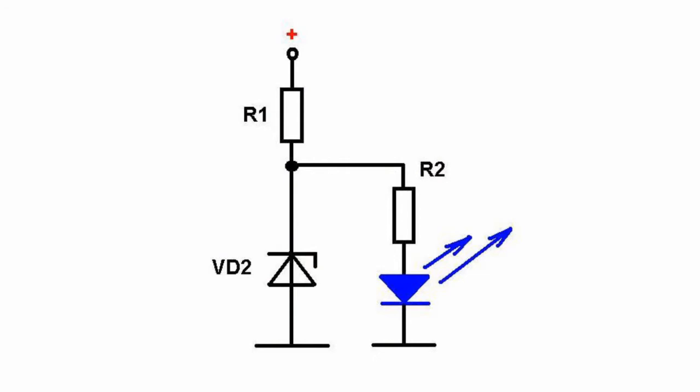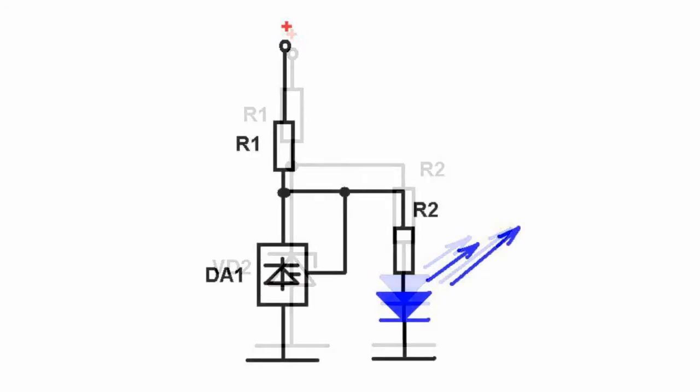Parallel stabilizer LT432 used instead of a zener diode substantially improves LED brightness regulation. This circuit has the voltage stabilization of 2.5V.